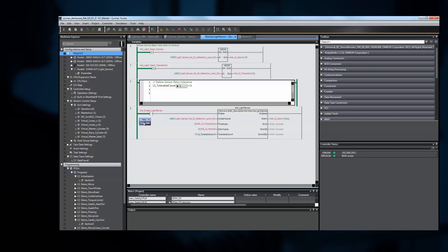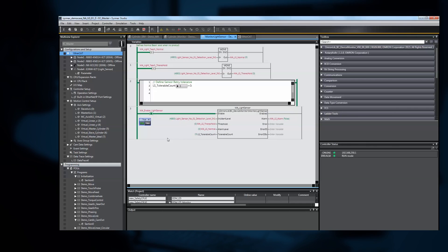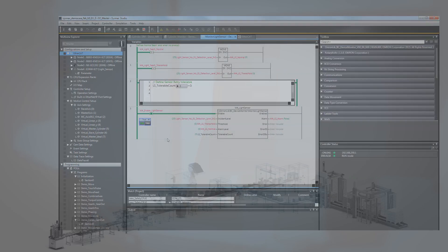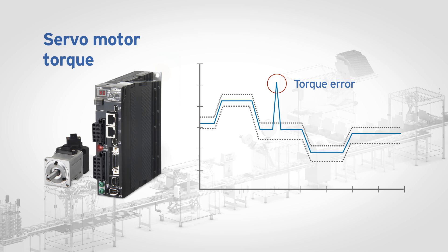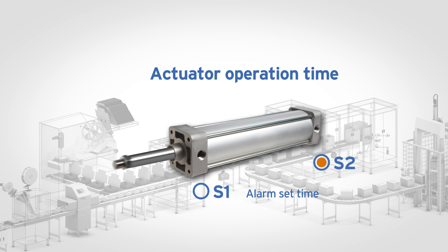Components such as servo drives, actuators, and sensors can all be monitored in real time, and whenever their operation deviates from a normal condition, a warning or alarm is raised before a critical failure occurs. With this function block library, you can easily monitor and evaluate the position and torque response of the servo motor against a normal operating range.